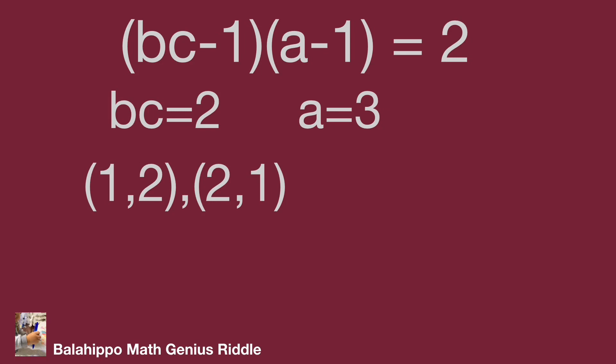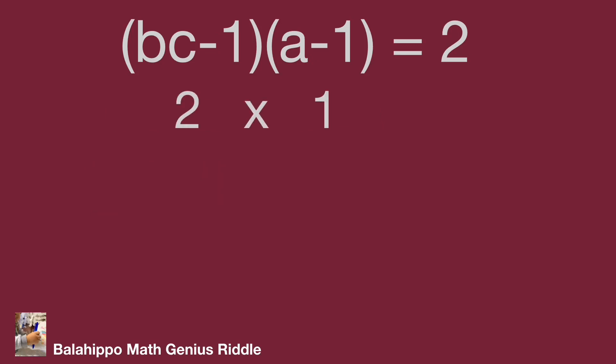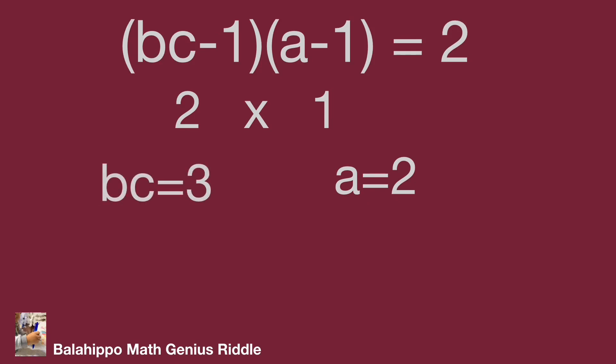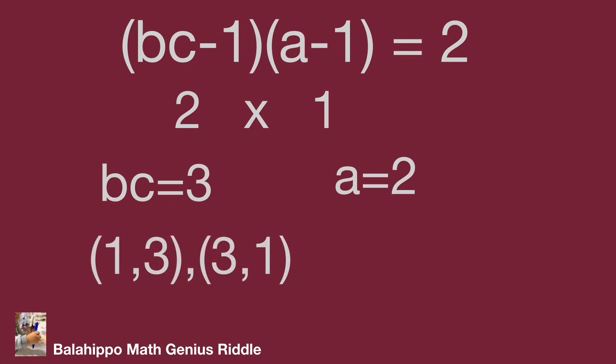In the 2 times 1 conditions: (bc plus 1) equals 2 and (a plus 1) equals 1, so a equals 0 — actually (a plus 1) equals 1 gives a equals 0... Reread: (a plus 1) equals 1 gives a equals 0, and bc plus 1 equals 2 gives bc equals 3. Wait — (a plus 1)=1 means a=0; since a must be positive, let's note: a equals 2 and bc equals 3. So bc could be (1, 3) or (3, 1), giving another two number groups for abc.